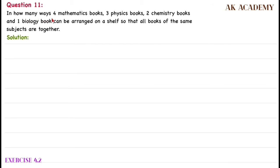In how many ways 4 mathematics books, 3 physics books, 2 chemistry books and 1 biology book can be arranged on the shelf so that all the books of the same subject are together?